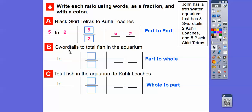Swordtails to total fish: there were three swordtails. Adding up for the total — three plus two plus five — that's going to be 10. So it's going to be three to 10. As a fraction, three over 10, and as a colon, three to 10. Total fish to kuhli loaches: the total is 10, kuhli loaches is two. So we write 10 to two, as a fraction 10 over two, and as a colon 10 to two right there.